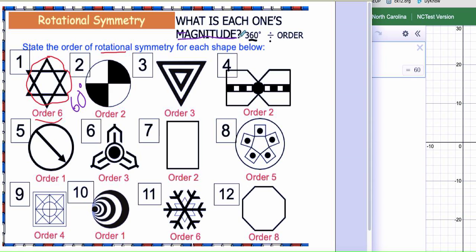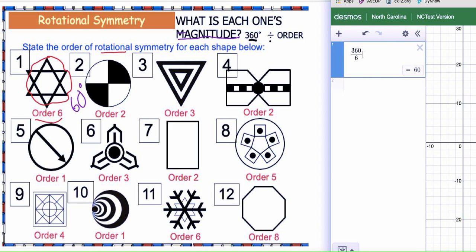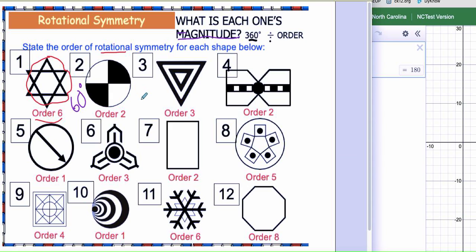Alright, so here in number two, you've got your rotational symmetry order of two. So what does that make it for magnitude? You take 360 and divide it by two, so your answer is 180 degrees.